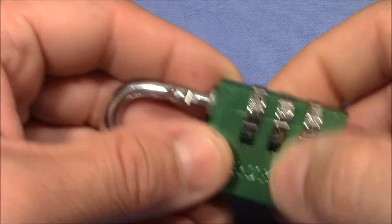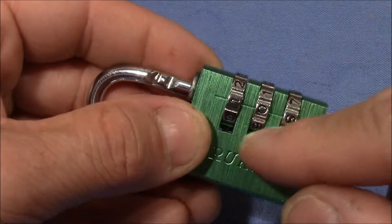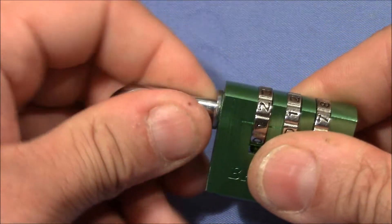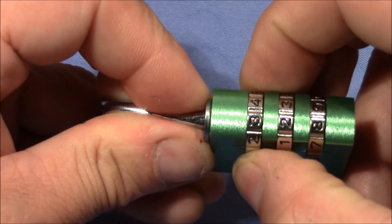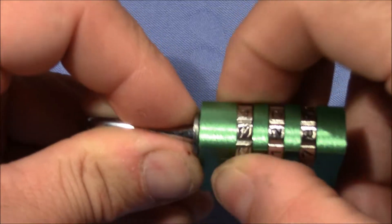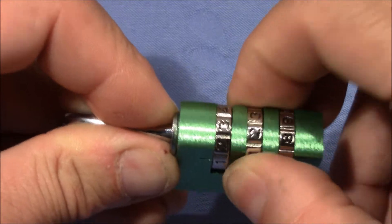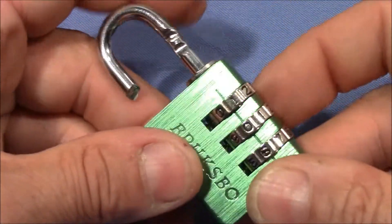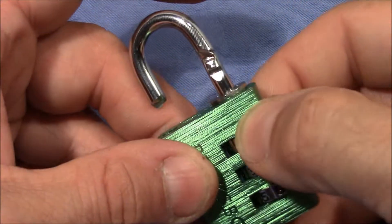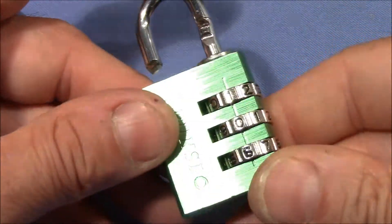If you have a false gate, for example here the zero is a false gate, and if you pull on the shackle you can see that's a true gate, quite a bit of movement. That's a true gate, that's a false gate, almost no movement. So it's really easy to find the right code by the usual pull picking method.